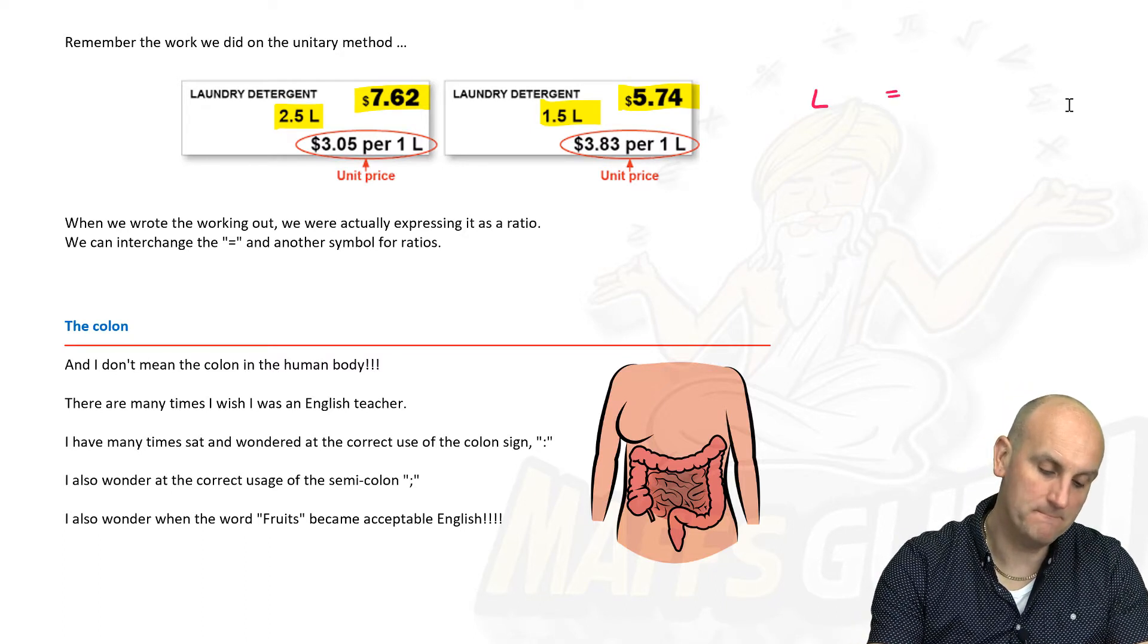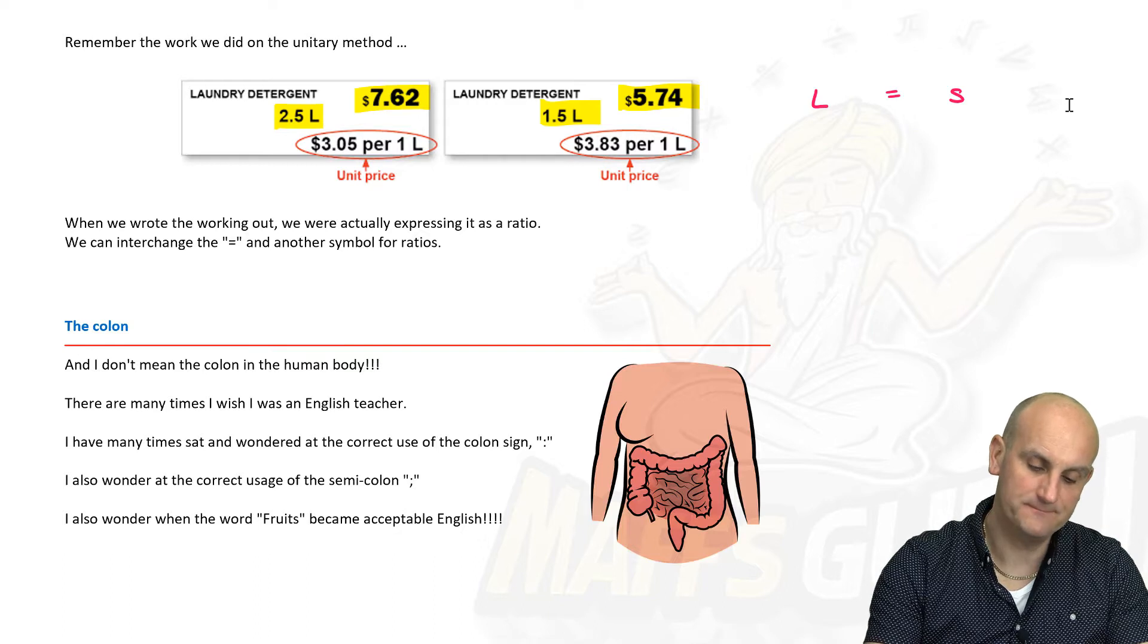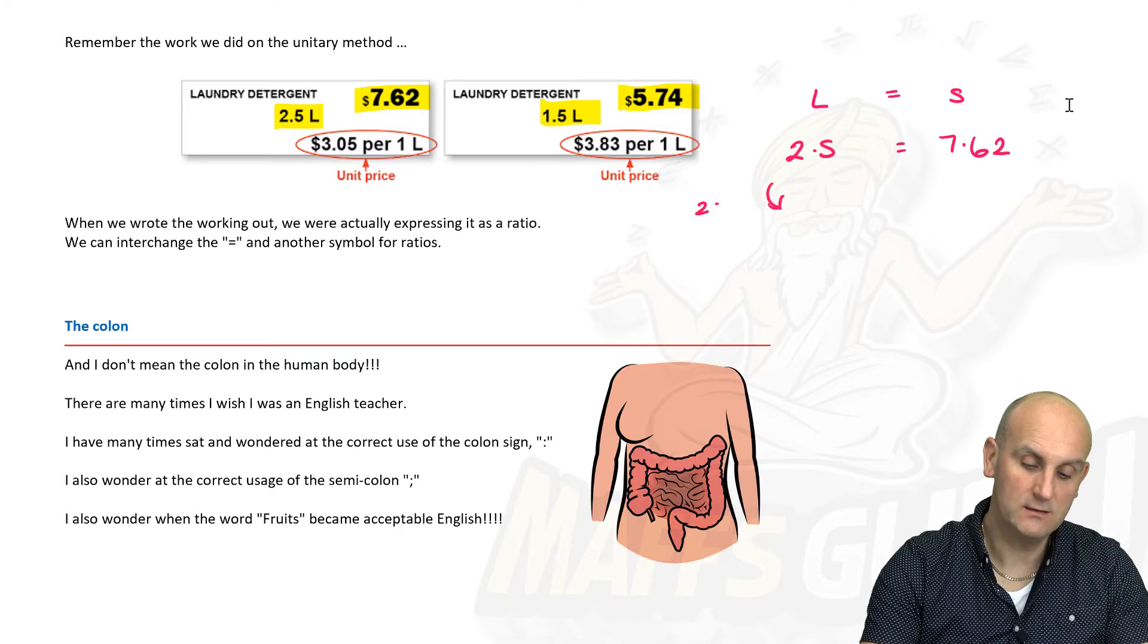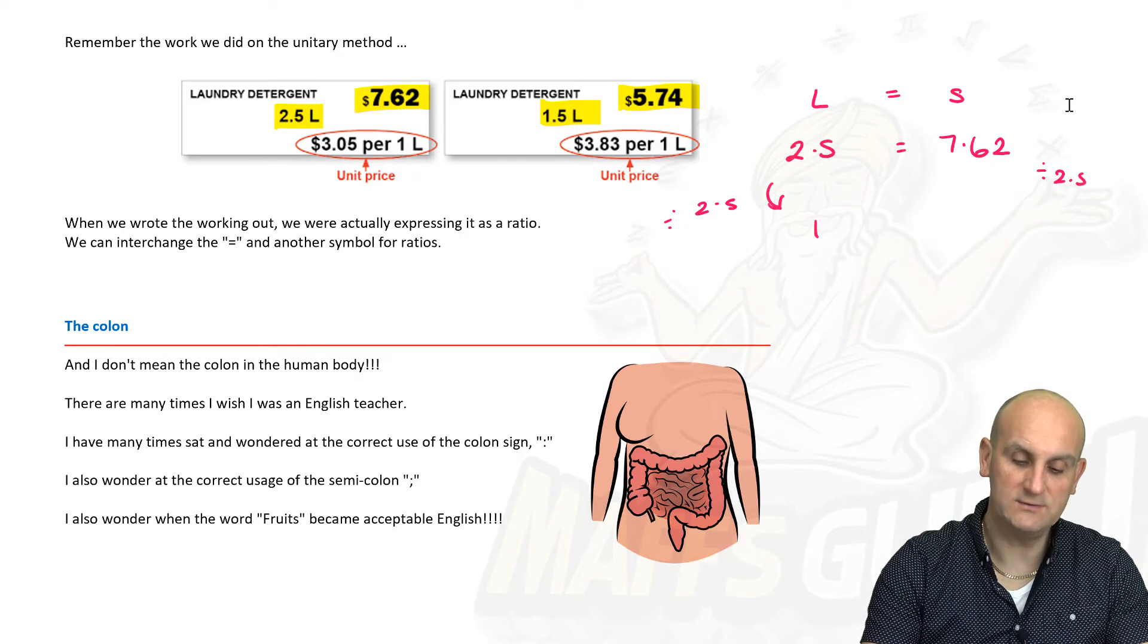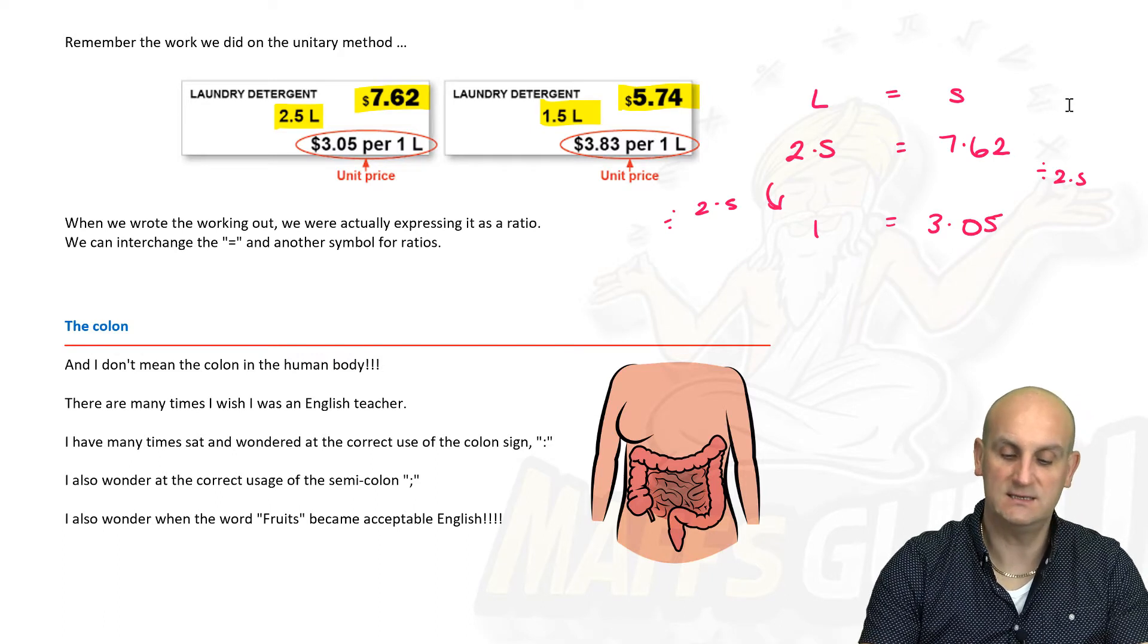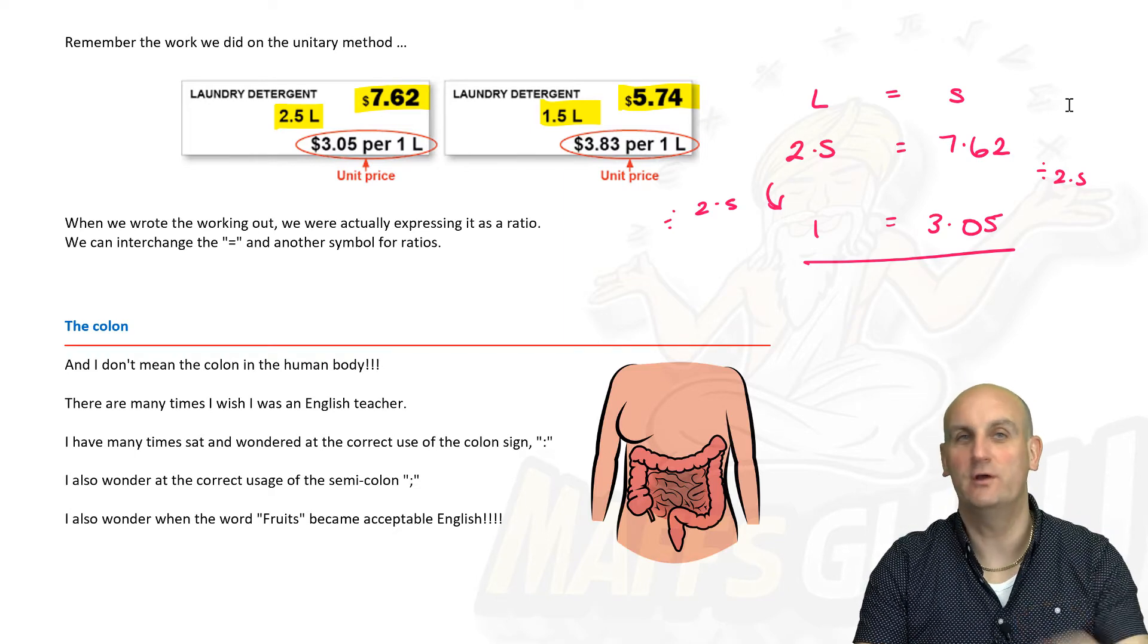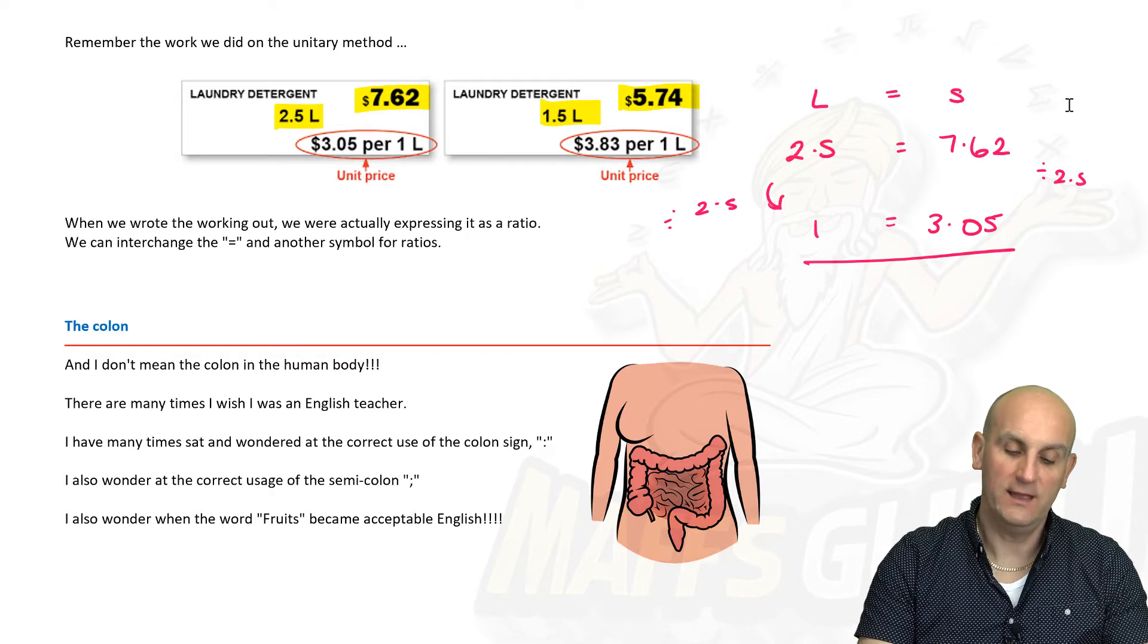So when I write liters and money, 2.5 liters is the same as seven dollars and sixty-two cents. All they've done is they've divided both sides by 2.5, and they've told me that one liter in that situation is the same as three dollars and five cents. That there is the unitary method, believe it or not. It's also a ratio because it's telling me for every one liter of laundry detergent, I am paying three dollars and five cents.